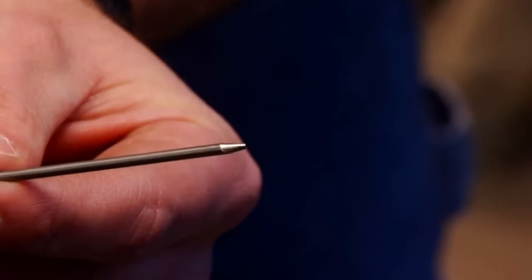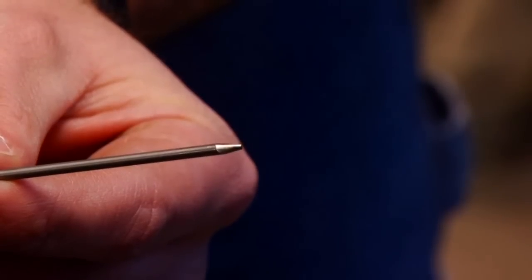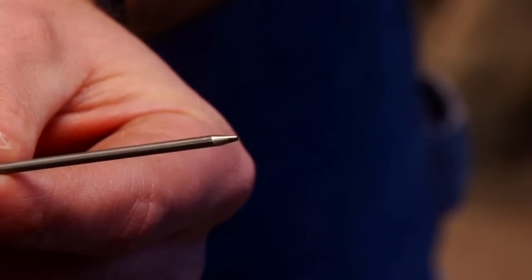When that is complete, we would place the tungsten back into the torch with the ground end sticking out approximately 3/16 to a quarter of an inch.